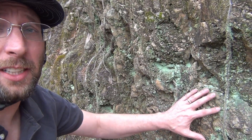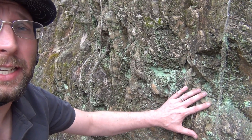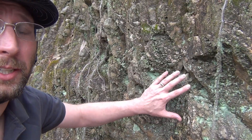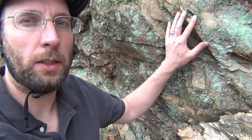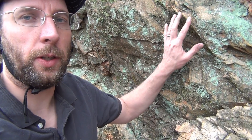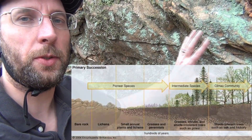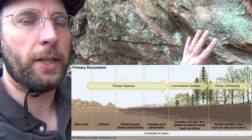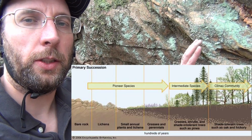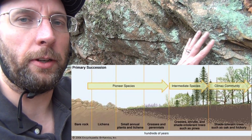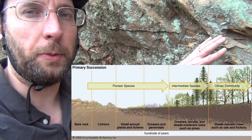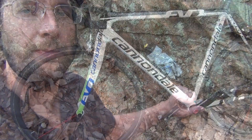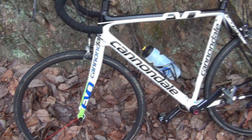This crustose lichen is growing here on rock and clay on the outside of a road cutaway. This crustose lichen growing on this rock will eventually develop soil so other plants can grow. Eventually smaller grasses and ferns might grow here, making way then to larger plants and trees.